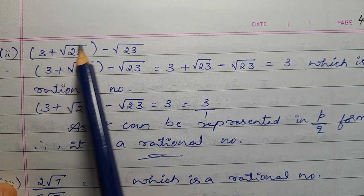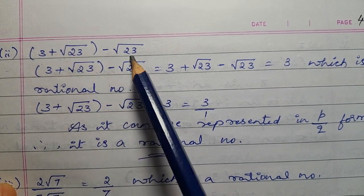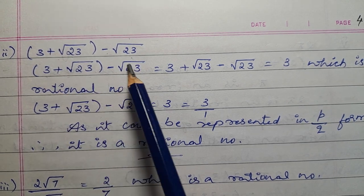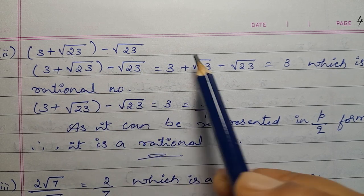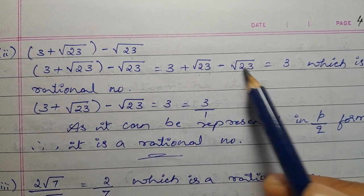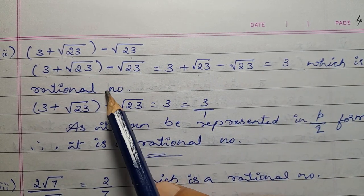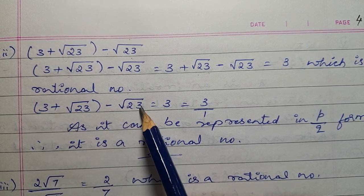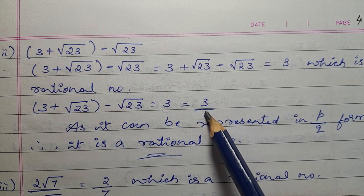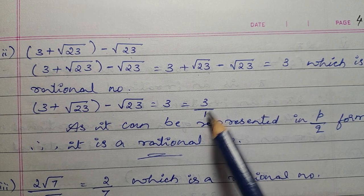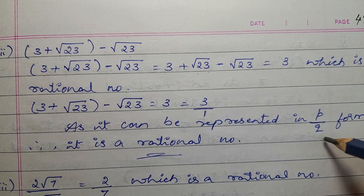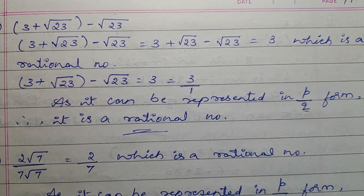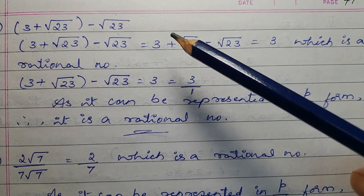Second one: 3 plus square root of 23 minus square root of 23. The square root of 23 terms cancel — positive and negative get cancelled — leaving 3, which is a rational number. So 3 plus square root of 23 minus square root of 23 equals 3, which equals 3 divided by 1. As it can be represented in P by Q form, therefore it is a rational number.